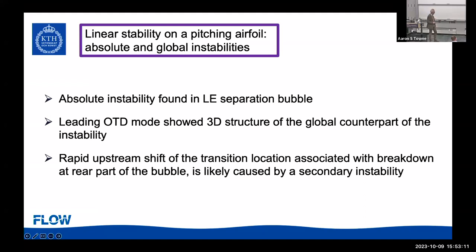We found an absolute instability in the leading-edge separation bubble and found the leading OTD mode showing this 3D structure associated with the global counterpart of that instability. Regarding the rapid upstream shift of transition associated with breakdown at the rear of the bubble, our current guess is that it's likely caused by some type of secondary instability of these structures — but that we cannot yet confirm.